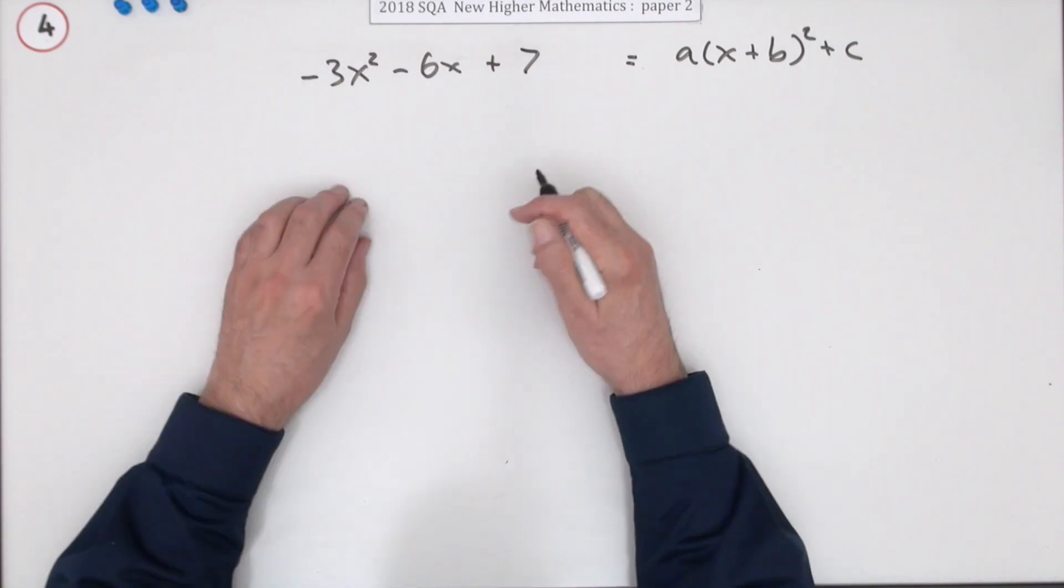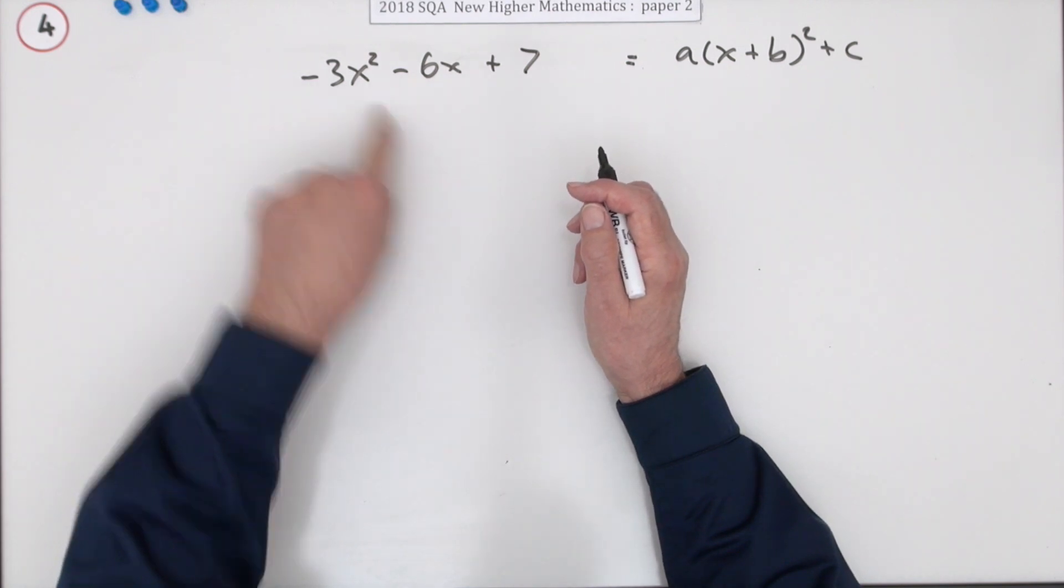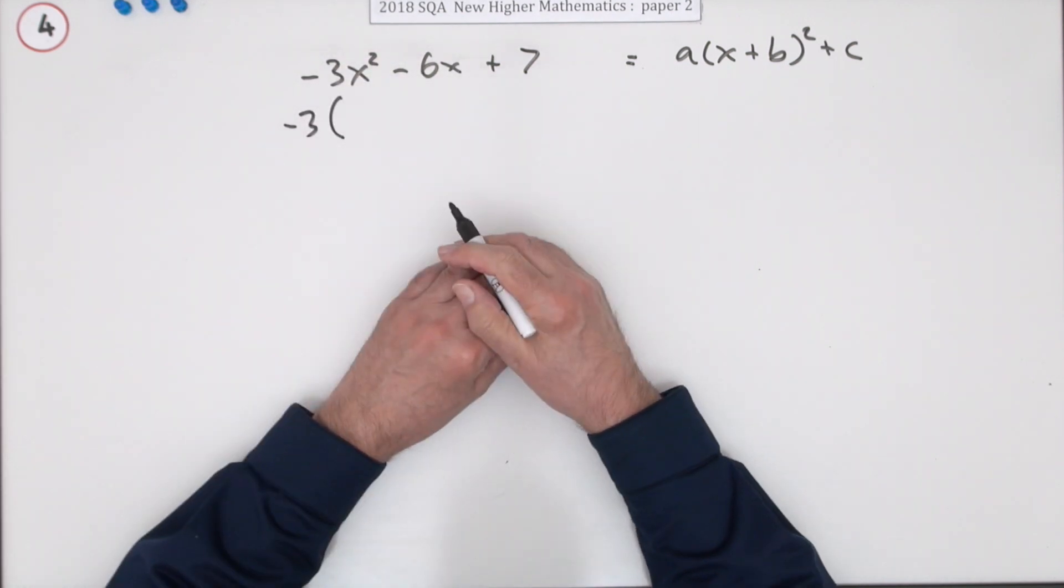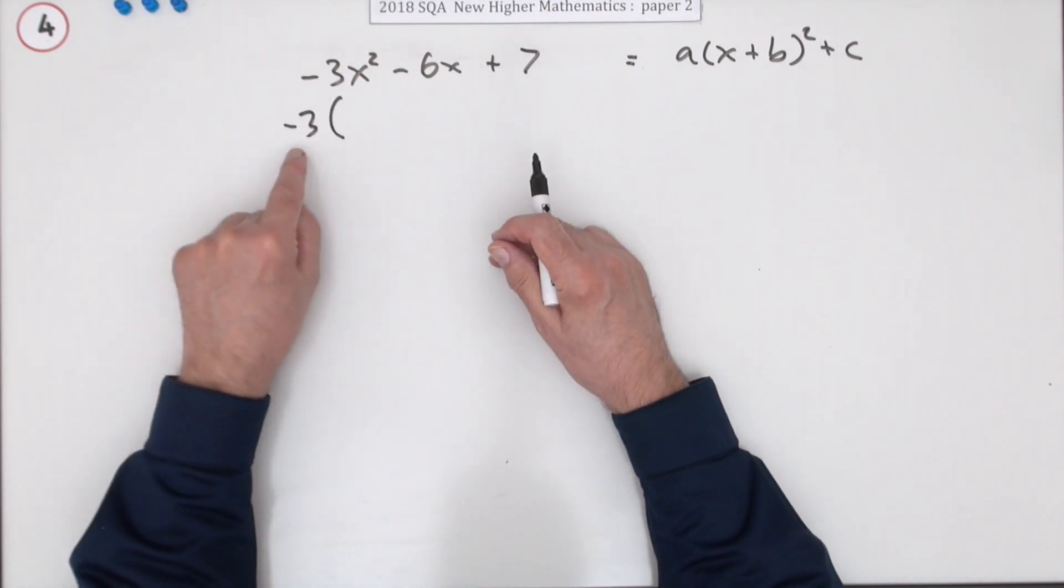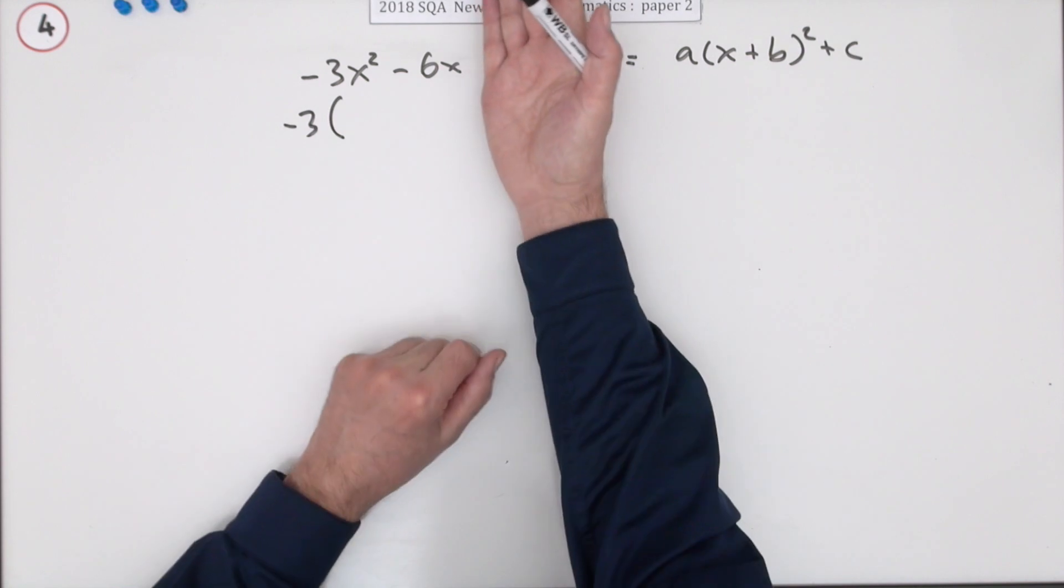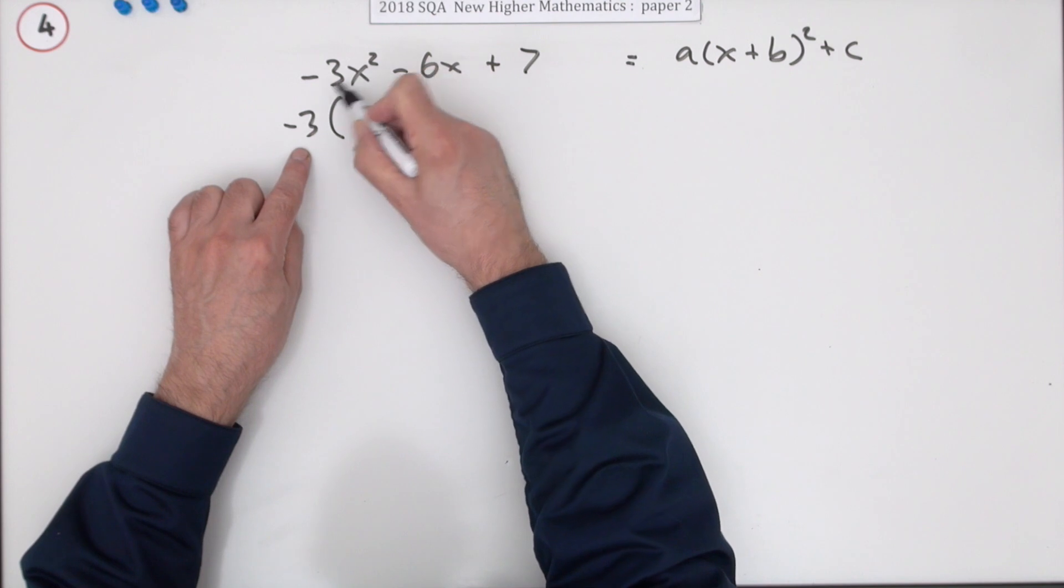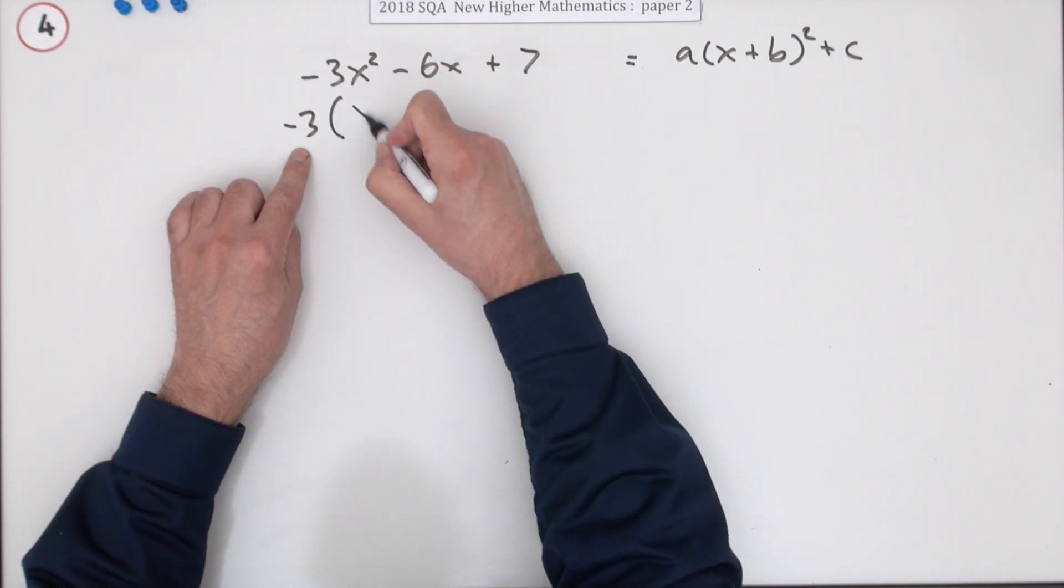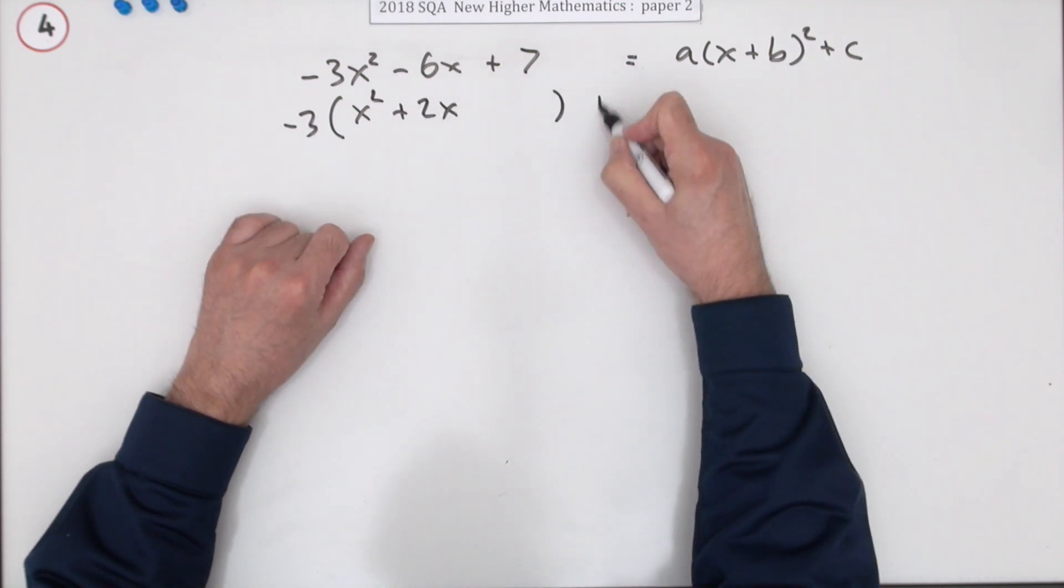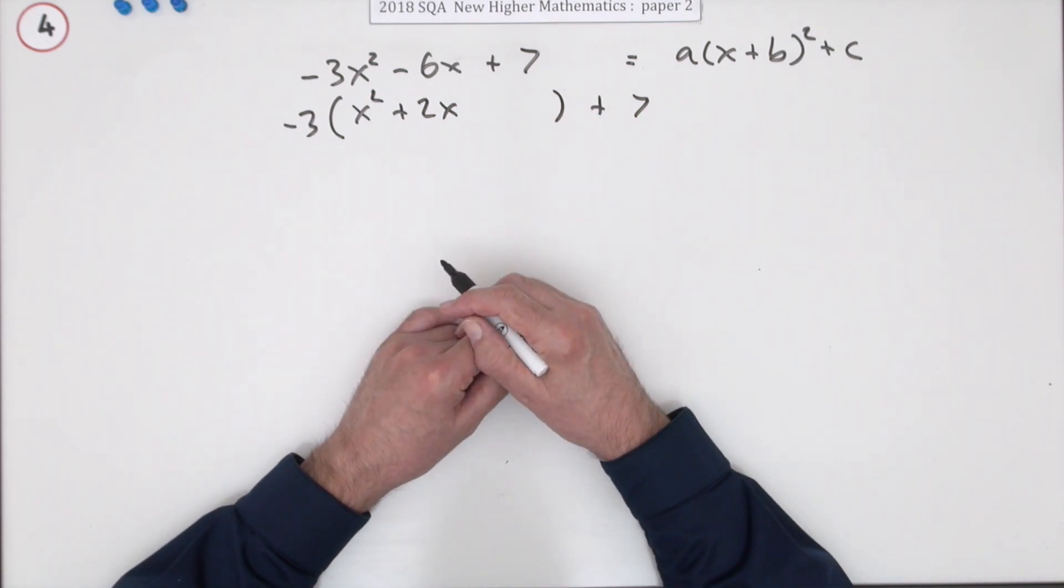But there's a straightforward technique that you know anyway. The simplest form of completing the square is when it just says x squared. So if there's anything at all in front of it, take that out as a factor. Now you've got two choices. You can either take it as a factor of all three parts, or just take it out as a factor of these two and ignore that 7 and let it float at the side. That's what I do. So taking out negative 3 means dividing by negative 3. So that just leaves x squared, but that leaves plus 2x. I'm going to leave a little gap. And I'm not going to use that 7.